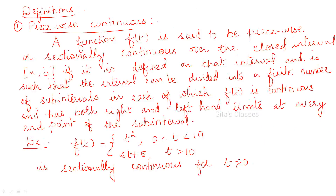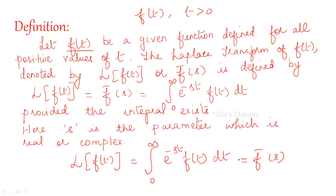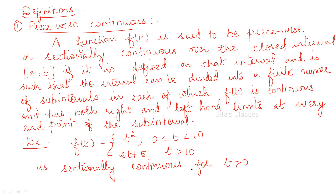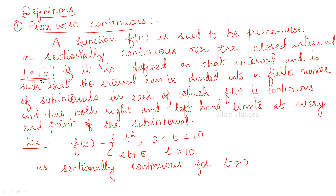Now we have some more definitions. That is piecewise continuous. We are going to find out the sufficient condition. Laplace transform can be found only if the integral exists. There are some conditions to be satisfied. For finding that condition, we should know some more definitions. One is piecewise continuous. Continuous function means f of t is not discontinuous at any point. But piecewise continuous, or sectionally continuous, means in a closed interval a to b, the same interval can be divided into subintervals and in each subinterval it should be continuous.